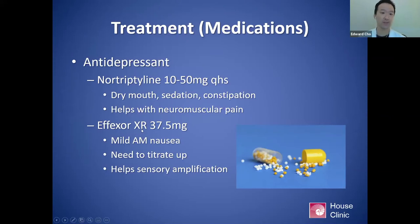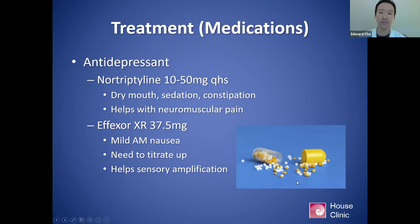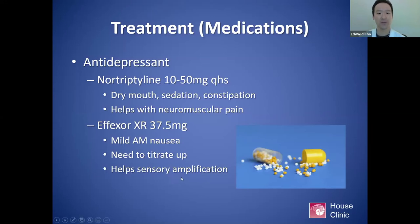Effexor XR (venlafaxine extended release), 37.5 milligrams — a serotonin norepinephrine reuptake inhibitor. I use a protocol I call microdosing, where patients open up the capsule containing time-release granules — usually about 40 to 60 granules depending on the generic — and start with two granules, then slowly scale up, like four the following week. I always emphasize to take it within the capsule so the time-release mechanism works appropriately, because immediate release venlafaxine is too much dosage all at once. I tend to use Effexor when there's more of a sensory amplification component — visual sensory overload, visual dependence type of symptoms — and it's very successful for that.